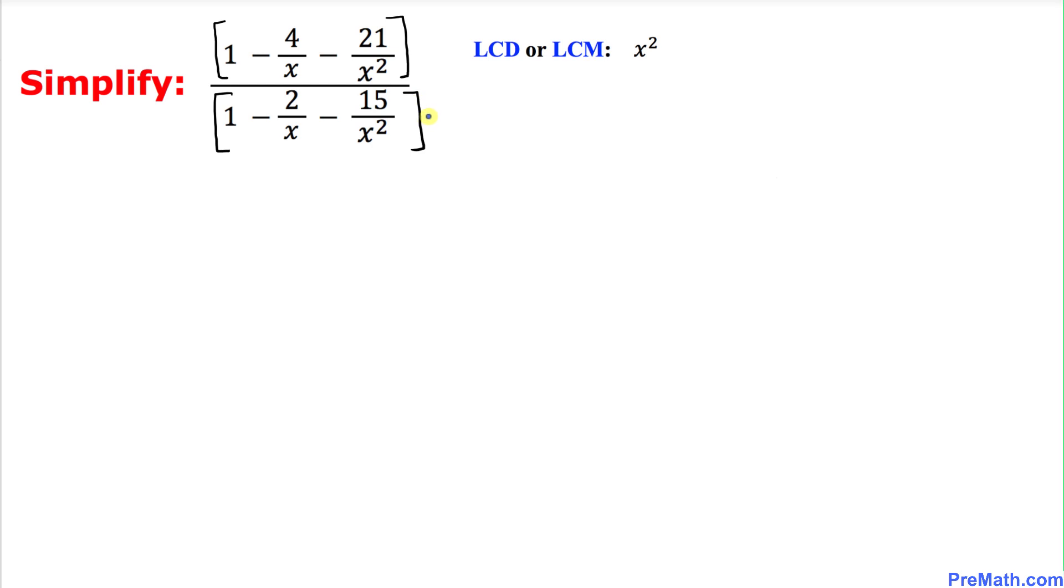And now let's focus on the denominator part of this fraction and we can see we have over here in the denominator x and x square as well. That means our least common denominator for this denominator part is also going to be x square.